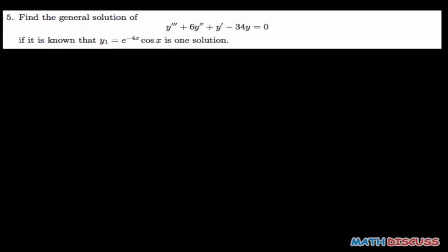So for question 5, it says find the general solution of the differential equation, which is this, if it is known that this is one solution. That is, if y₁ equals this is a solution.